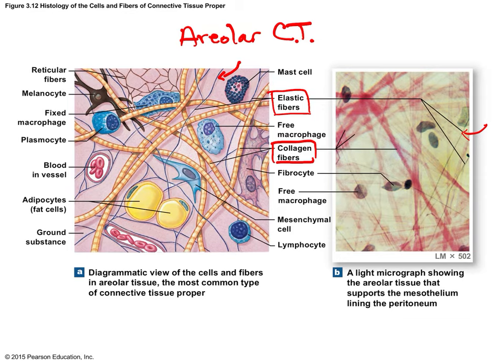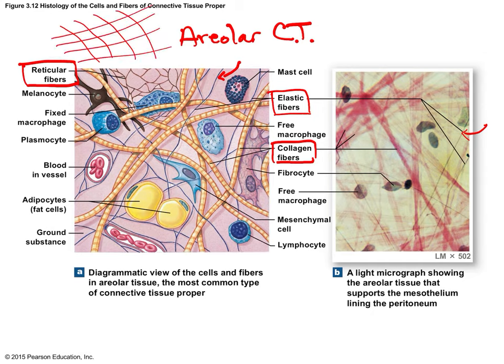Reticular fibers form a fish netting pattern — they're short, branched, and found in tissues that allow filtering to happen. Think of an actual fish net: crisscrossing fibers create spaces where fluid flows through but larger cells get trapped. Reticular connective tissue is found in organs that filter, such as the kidneys, liver, and lymph nodes.